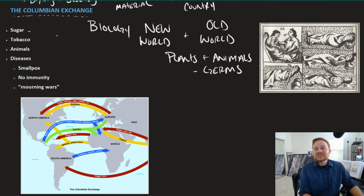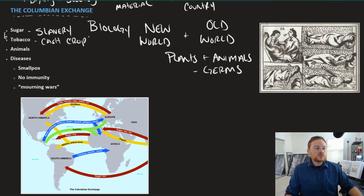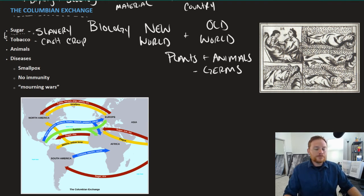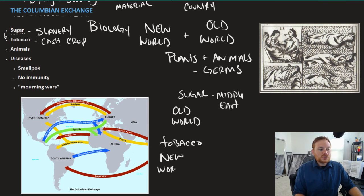Among the important commodities in this exchange were sugar and tobacco. Sugar brought slavery and specifically African slavery to the New World. Tobacco, like sugar, is also a cash crop — it was grown more in the English colonies and eventually also utilized slave labor. One distinction: sugar was an Old World commodity, historically grown in the Middle East, while tobacco was New World. There was no tobacco in Europe, Asia, or Africa before Christopher Columbus — it was grown in the Americas and exported to Old World consumers.